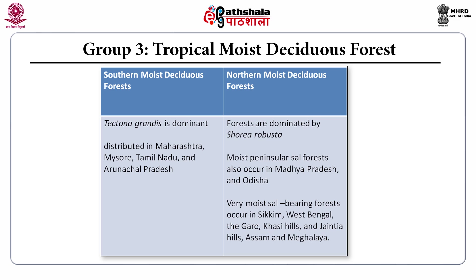Comparing the southern and northern tropical moist deciduous forests: the southern type is dominated by Tectona grandis, while the northern moist deciduous forests are dominated by Shorea robusta. The very wet moist sal-bearing forests occur in Sikkim, West Bengal, the Garo hills, Khasi hills, Jaintia hills, Assam, and Meghalaya.